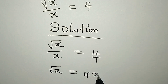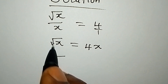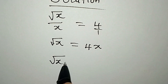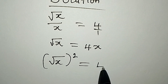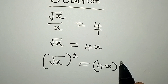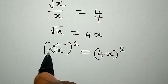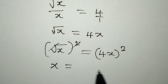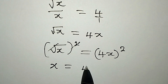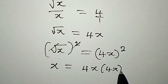That gives us 4x. Now to remove the square root I have to square both sides, so we have 4x in brackets to the power of 2. This is going to eliminate the square root, and x is equal to 4x multiplied by 4x.